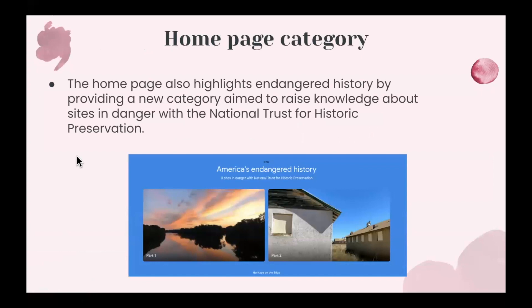Importantly, the homepage also highlights endangered history and provides a newer category that raises awareness about sites that are in danger, in partnership with the National Trust for Historic Preservation. For example, there's a section called America's Endangered History where you can see some of the sites that are in danger and learn more. The site also helps to raise awareness about important causes, which is another great aspect of Google Arts and Culture.